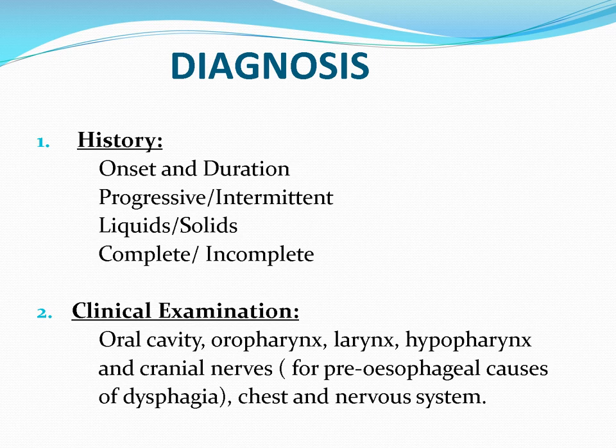When a patient comes with difficulty in swallowing, management depends on history, clinical examination, and investigations. First, find out the onset and duration of dysphagia. If onset is early, there may be a history of foreign body or infection. If it is progressive, a tumor may be blocking the lumen of the esophagus. Determine whether it is an emergency or a progressive condition.